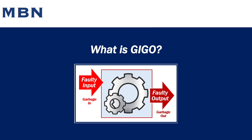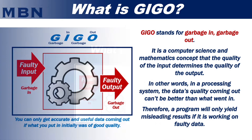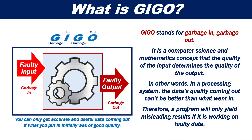What is GIGO? GIGO, or G-I-G-O, stands for garbage in, garbage out. It is a computer science and mathematics concept that the quality of the input determines the quality of the output. In other words, in a processing system, the data's quality coming out can't be better than what went in.